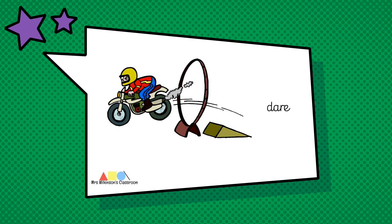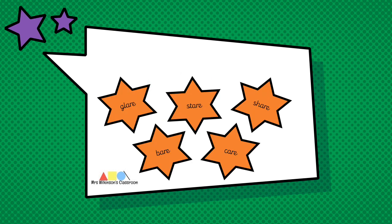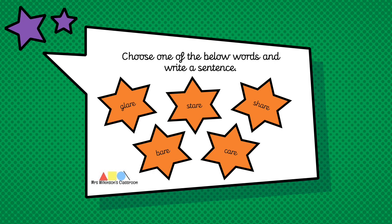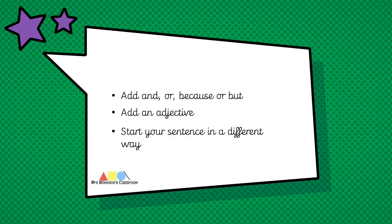For today's application activity, we are going to choose one of the words below and write a sentence. I'd like you to write five sentences. The words are: glare, stare, share, bear, and care. Go to the next slide if you want a little bit of a challenge. Can you add 'and', 'or', 'because', or 'but'? Can you add in an adjective? Could you start your sentence in a different way?